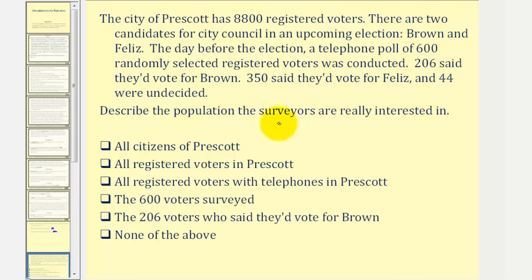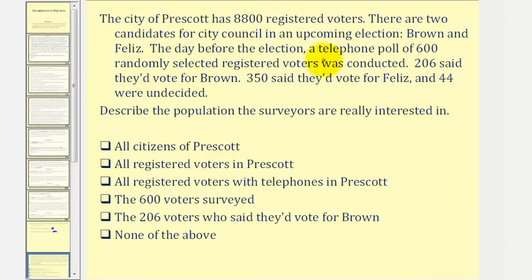Describe the population the surveyors are really interested in. The choices include: all citizens of Prescott, all registered voters in Prescott, all registered voters with telephones in Prescott, the 600 voters surveyed, the 206 voters who said they'd vote for Brown, or none of the above. Going back to the given information, they conducted a poll of 600 randomly selected registered voters from within Prescott, so the population they're really interested in would be all registered voters in Prescott.